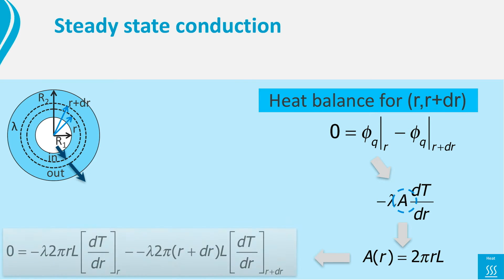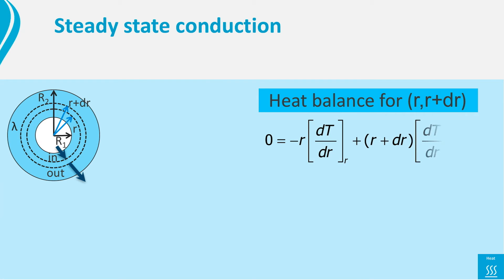The heat balance thus becomes more complicated. We can still simplify by taking out lambda, 2π and l. Furthermore, we can bring r in the first term into the brackets, and similarly r plus dr in the second term in the brackets.